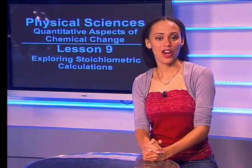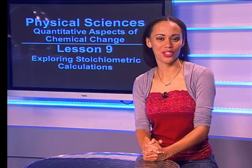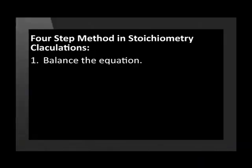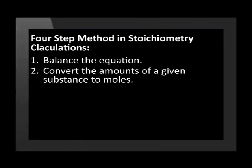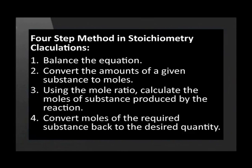In the previous lesson we discussed a four-step process to help us in these calculations. Step one is to balance the equation. Step two is to convert the amounts of a given substance into moles. In step three we use the mole ratio to calculate the moles of substance produced. And lastly we convert the moles of the required substance back to the desired quantity.